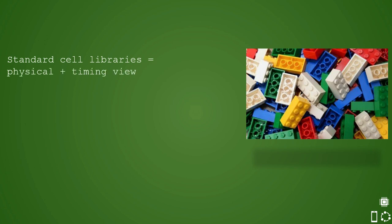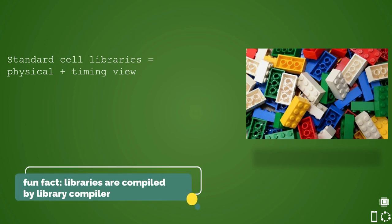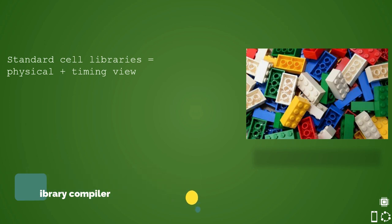This library collection has two major categories. One is physical view and one is timing view. In this lecture, we shall be discussing timing view of the library and in upcoming lecture, we will be discussing physical view of the library.